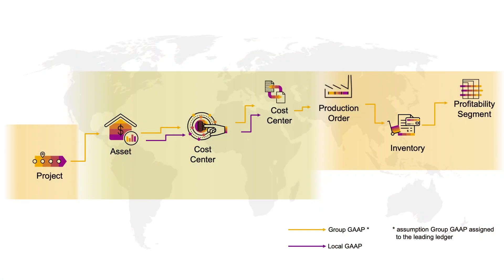Imagine the following situation: an investment project which consumes materials, activities, and other direct costs. When the investment project is finalized, it gets capitalized as an asset under construction and eventually a finished asset. Depreciation kicks in, which ends up in a specific area of responsibility, typically represented by a cost center, whereby asset capitalization values differ between GAAPs. Depending on the situation, the costs on this cost center get allocated. Up till here, handling multiple valuation views is covered, apart from the project settlement, which is based on a group valuation principle.